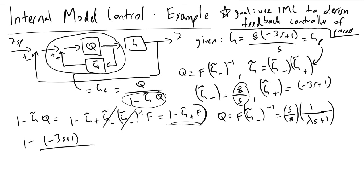and we're going to divide it by lambda S plus 1 by lambda S plus 1, because our filter was 1 over lambda S plus 1.